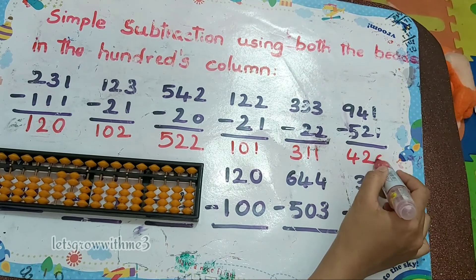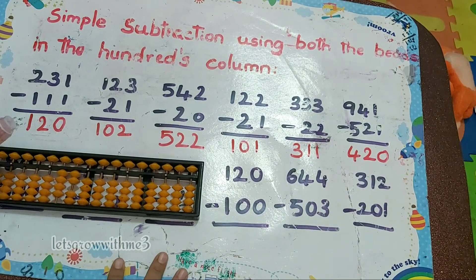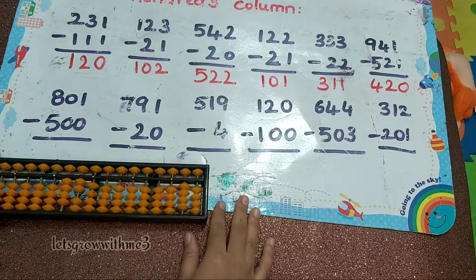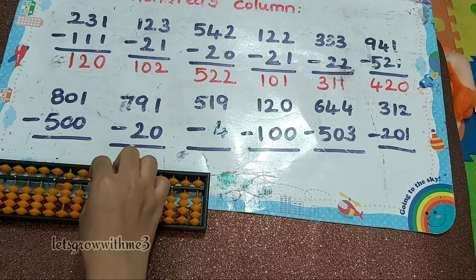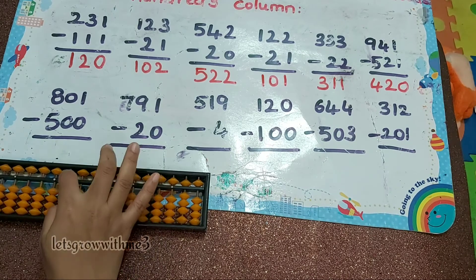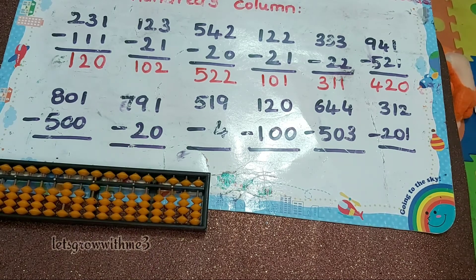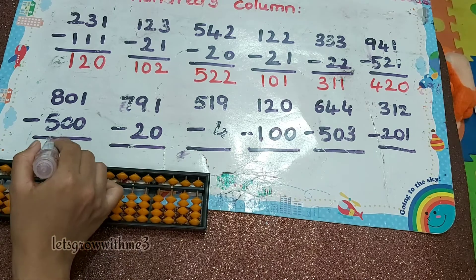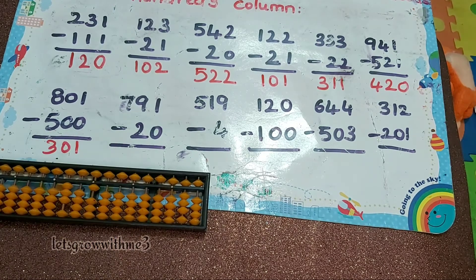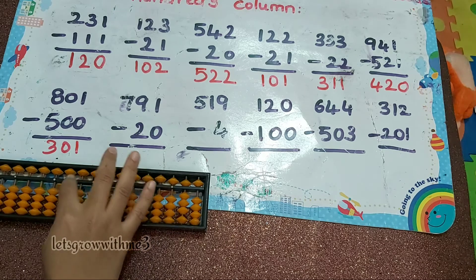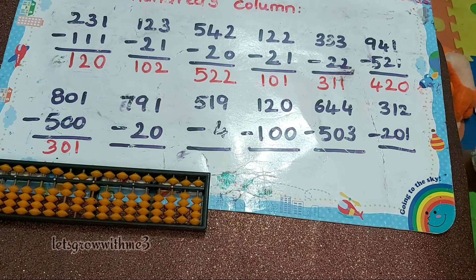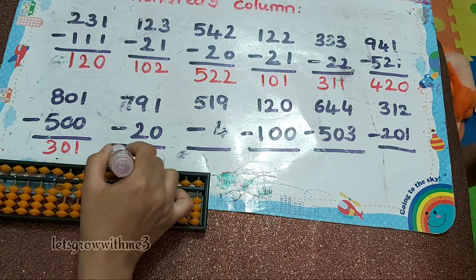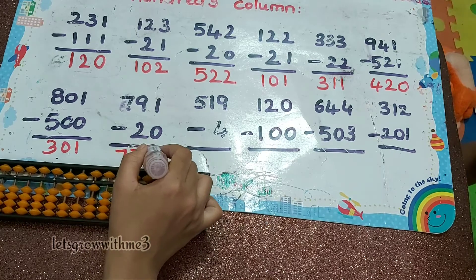Next one: 801 minus 500, so the answer is 301. Next one: 791 minus 20, so the answer is 771.